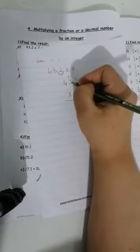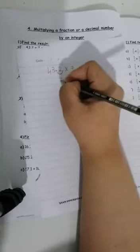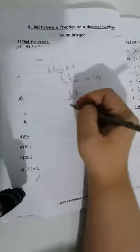7 times 2, 14. 4 down, 1 up. 7 times 3, 21 plus 1, 22. 2 down, 2 up. 7 times 4, 28 plus 2, 30.